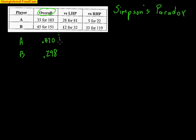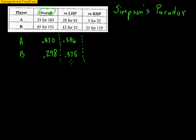However, things start to change and become a little weird when we look at left-handed pitchers versus right-handed pitchers. Versus left-handed pitchers, Player A is 28 out of 81 — that is 0.346, a pretty good batting average. Player B is 12 out of 32, which is 0.375. So in terms of going against a left-handed pitcher, Player B is better.